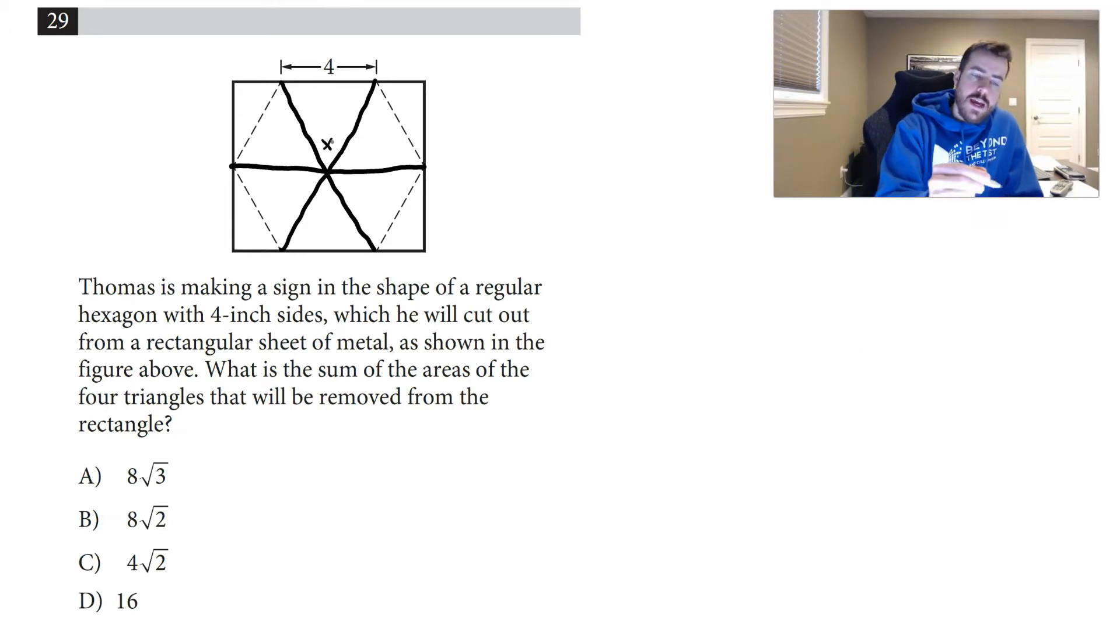First thing I'm going to do is figure out what the central angle would be. We know if I went all the way around in a full circle, that would be 360 degrees. There's 1, 2, 3, 4, 5, 6 angles there, so we're just going to do 360 divided by 6 to figure out that each angle is 60 degrees.